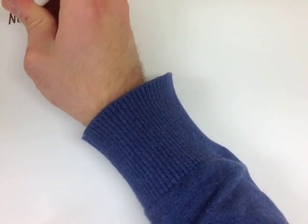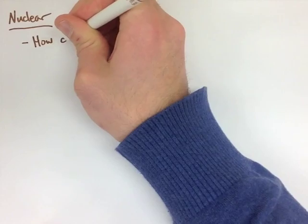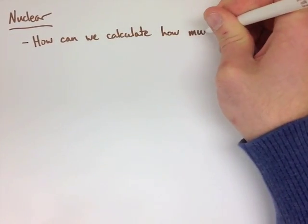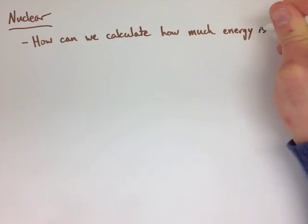In a nuclear reaction, we can calculate how much energy is produced from the lost mass using a very famous equation. We use E equals MC squared,